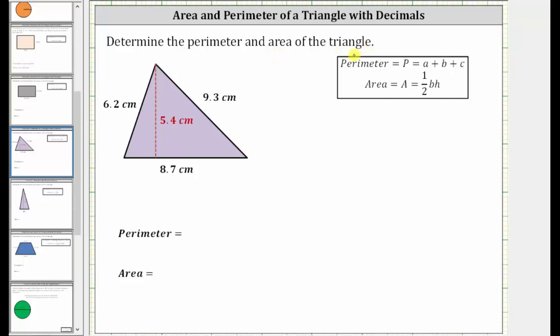Determine the perimeter and area of the given triangle. Let's begin with the perimeter. The perimeter is a distance around the outside of the triangle.